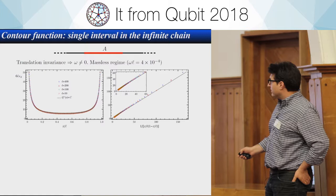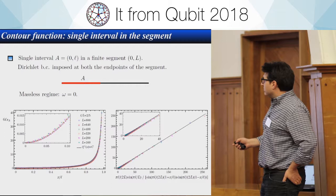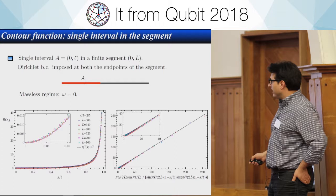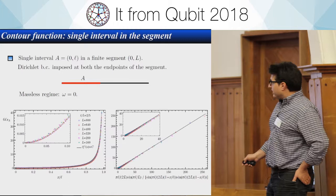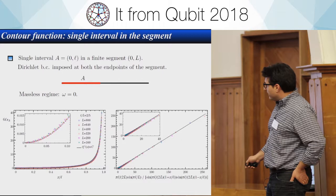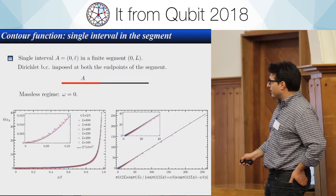This is the comparison with the CFT expression. The numerics match, with only a constant shift fitted. For a single interval in the segment, this is the comparison between the numerics, the contour function, and the CFT expression — the dashed black line. The CFT prediction captures the behavior very well close to the entangling point, but the part close to the boundary is not captured because it is non-universal and very sensitive to the boundary conditions — in this case, Dirichlet boundary conditions.